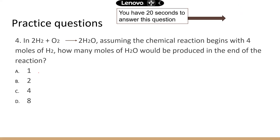If you begin with 4 moles of hydrogen gas, how many moles of water would be produced? Looking at the coefficients, hydrogen gas and water are in a 1-to-1 ratio — it's written as 2-to-2, but we simplify to 1-to-1. So however many moles of hydrogen gas go into the reaction, that's how many moles of water you get. With 4 moles of hydrogen gas, you get 4 moles of water.